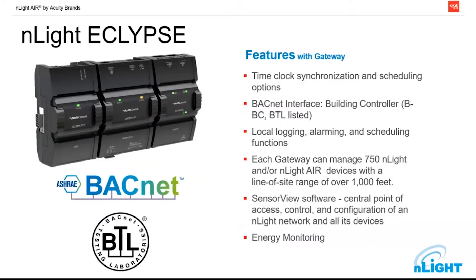That little black box — the Eclipse. The main features important for a contractor or building owner to know: it gives us our astronomical time clock, ability to add schedules, preset themes, different profiles based on time of day, and also our BACnet interface. So we are able to build a building automation system. The BAS can listen to our sensors and write some data as well. That's included for free with our Sensor View software, which also comes free with this Eclipse backbone device. It also gives us the ability to do some energy monitoring.